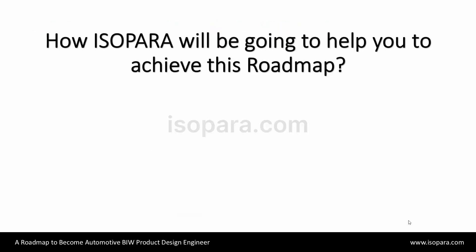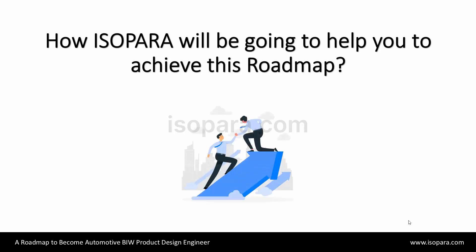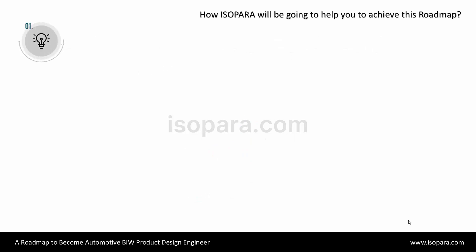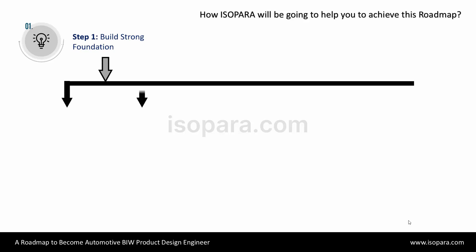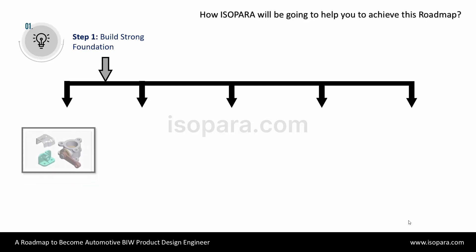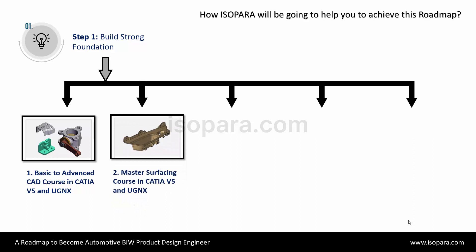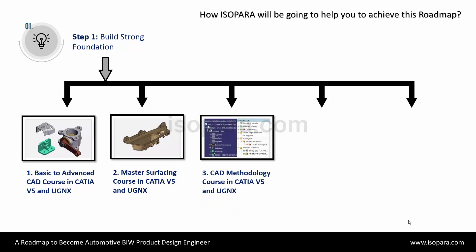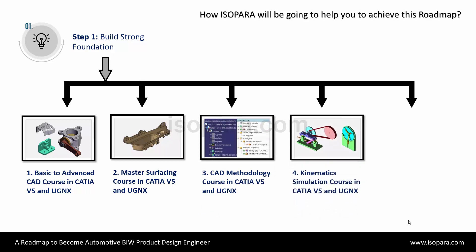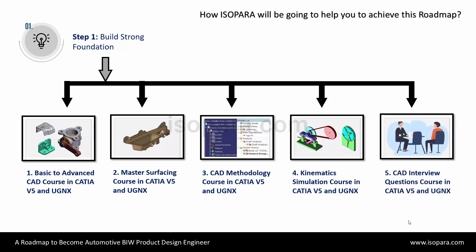Now we are going to see how iSopara will help you in achieving these steps and in becoming an automotive design engineer. iSopara has all the relevant courses mentioned in each step. These courses are made by experts and used by learners globally to study the automotive BIW product design domain. Step 1 courses include: Basic to Advanced CAD Course in CATIA and Unigraphics, Master Surfacing Course in CATIA and Unigraphics, CAD Methodology Course in CATIA and Unigraphics, Kinematic Simulation Course in CATIA and Unigraphics, and CAD Interview Questions Course in CATIA and Unigraphics.